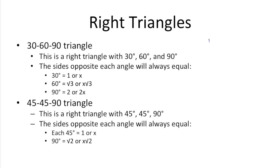30, 60, 90 triangles just mean that one angle's 30, another angle's 60, and the other angle's a right angle. The sides opposite each of those angles will always be represented by a specific proportion. So the side opposite 30, the smallest side, will always be x. The side opposite 60 will always be represented by x root 3, and the hypotenuse will always be 2x. So if in this example x were to be 3, the side opposite 30 would be 3, the side opposite 60 would be 3 root 3, and the hypotenuse would be 6.